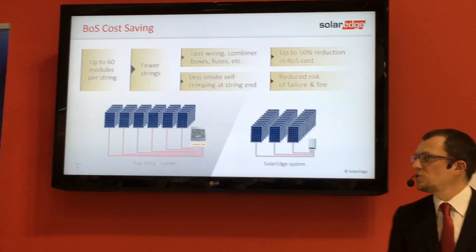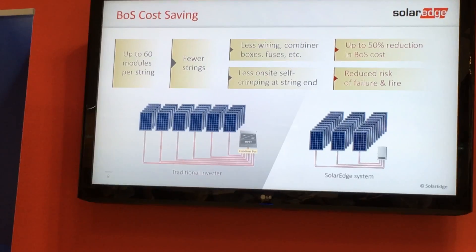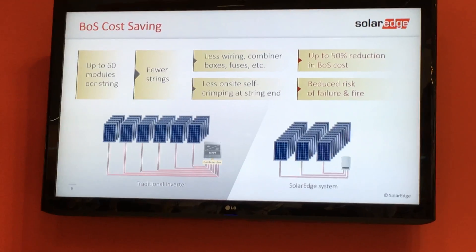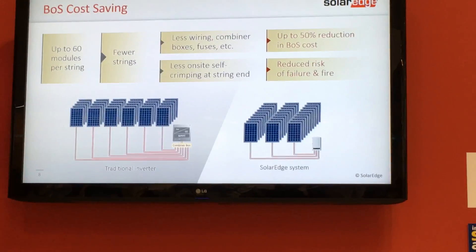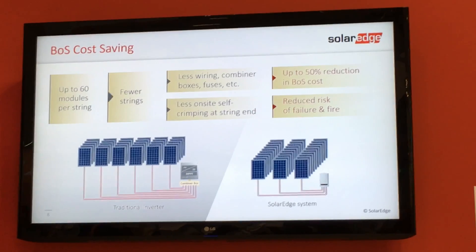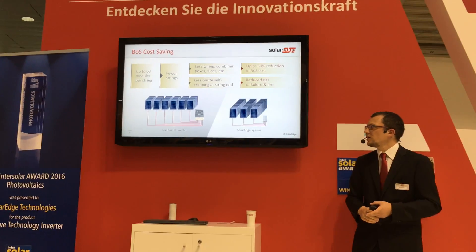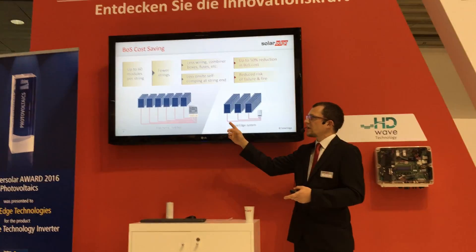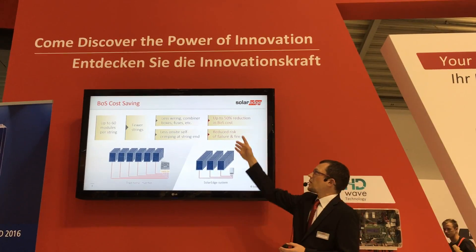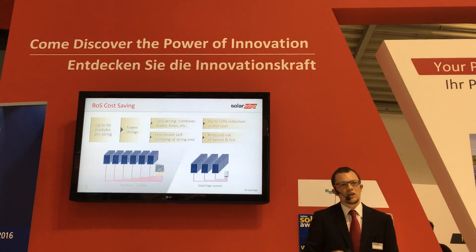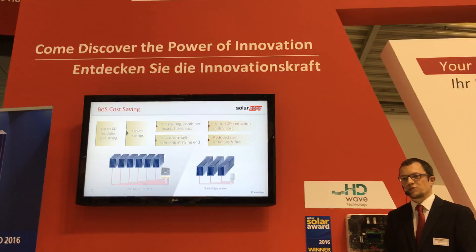There are lots of strings here running between the modules and the inverter. In some cases, you need the combiner boxes. With our optimized solution here, you can put up to 11.25 kilowatts of module power in one string. So in many cases, this allows you to severely reduce the number of strings that you need to run here, allowing you to save on the cabling and also on the combiner boxes. In some cases, you can reach up to 50% reduction in the bill of system costs due to the lower cabling and combiner boxes.